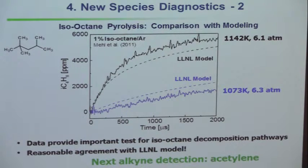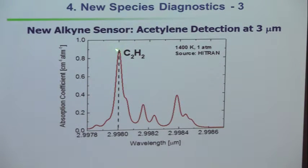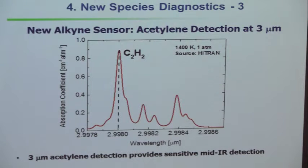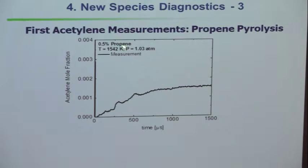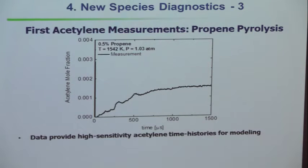What about acetylene? We became interested in acetylene because it's a precursor to soot formation. We began to do this in the infrared at 3 microns. Acetylene is small enough to be in HITRAN, so you can compute what the absorption spectrum should look like — subject to some issues about line broadening. We went into propene pyrolysis experiments, converting propene into acetylene and measuring the time history. You can begin to see how time histories determine the rate coefficients of pyrolysis as big hydrocarbons become smaller. This is the JetSurf 2.0 model from USC — and you can see a big discrepancy.